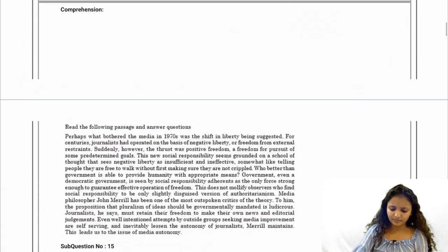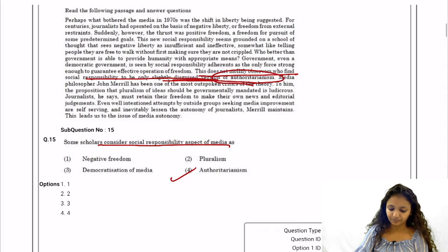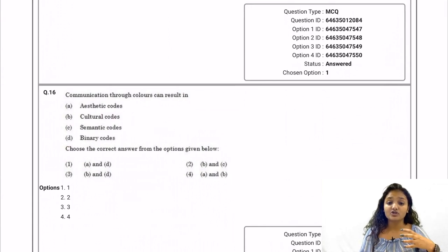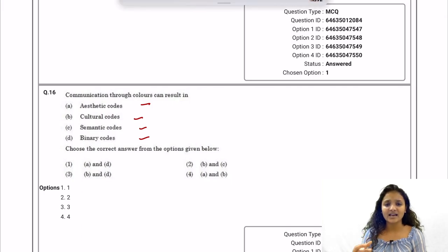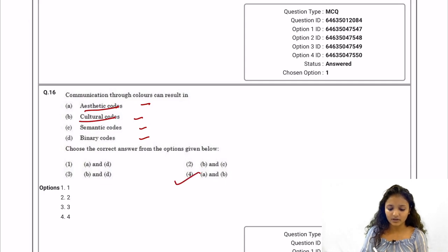Question 15: Some scholars consider the social responsibility aspect of media to be authoritarianism — we can see it is described as a slightly disguised version of authoritarianism, so that is the correct answer. Question 16: Communication through colors results in aesthetic codes and cultural codes. Aesthetic code relates to art or paintings, and cultural codes relate to color meanings in different cultures. So option number four is the correct answer.